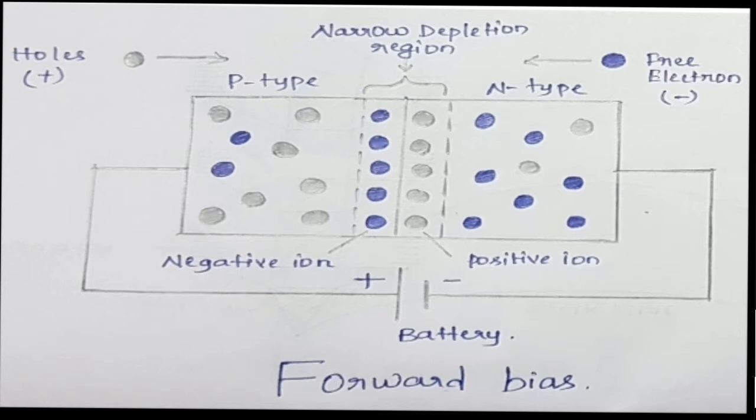If we say electric current, we mean a flow of charge carriers. If we say a flow of electrons on the N-side, or a flow of holes on the P-side, and if there are majority carriers on that side, we can conduct electricity. This is the forward bias condition.